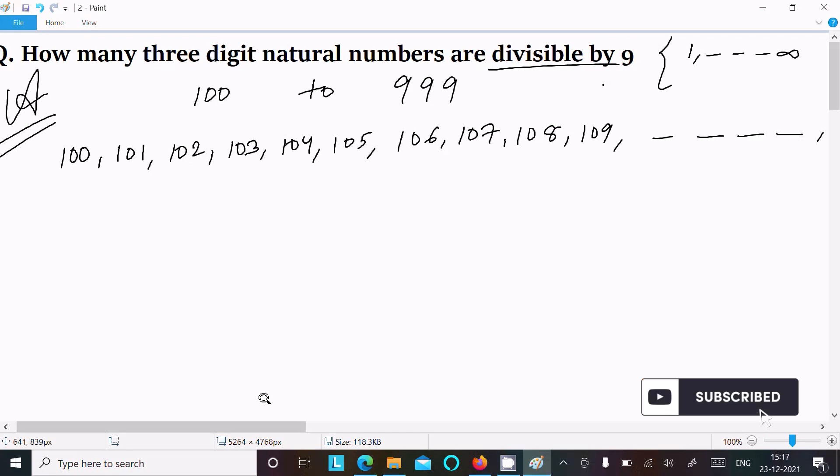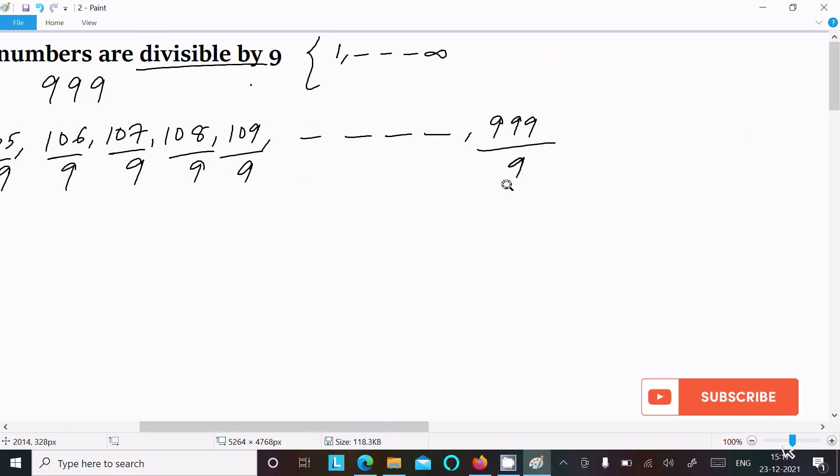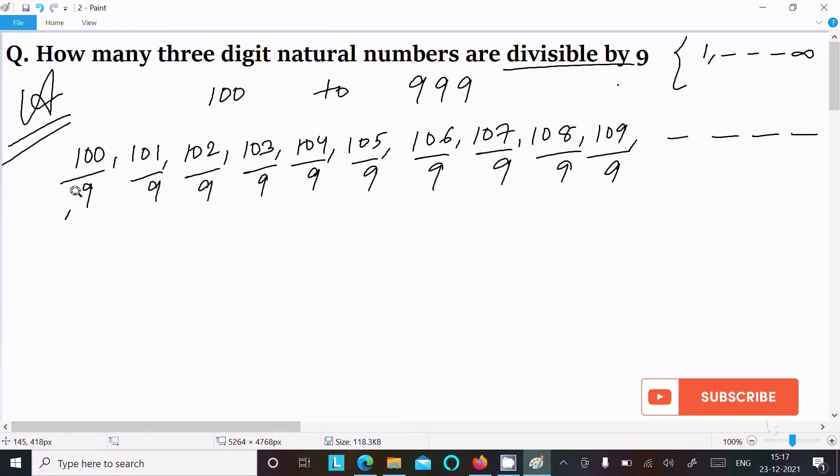Now, which are divisible by 9? Let's divide by 9. 999 is divisible by 9. If you divide the numbers starting from 100, many are not divisible - not, not, not... If you try to divide, 12 times 9 equals 108, so that is divisible.